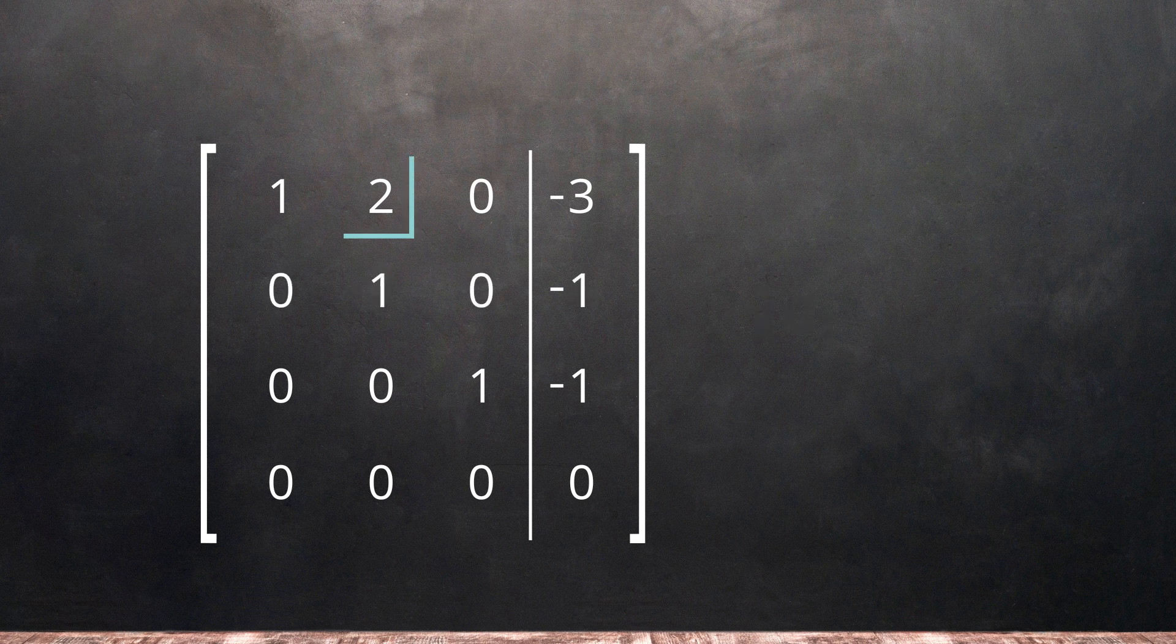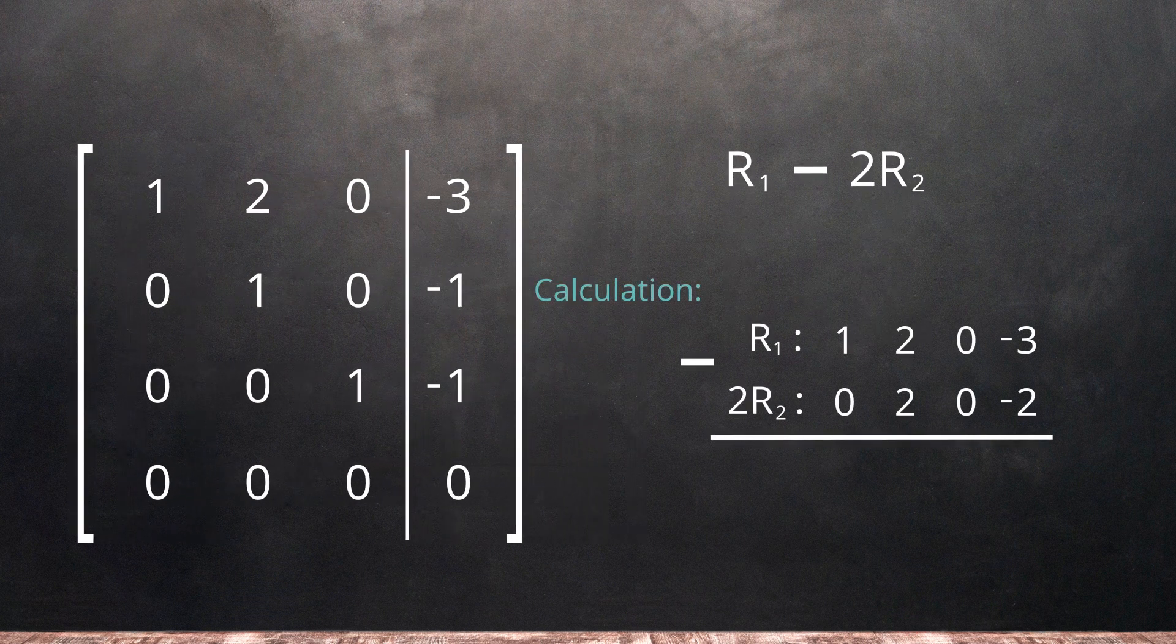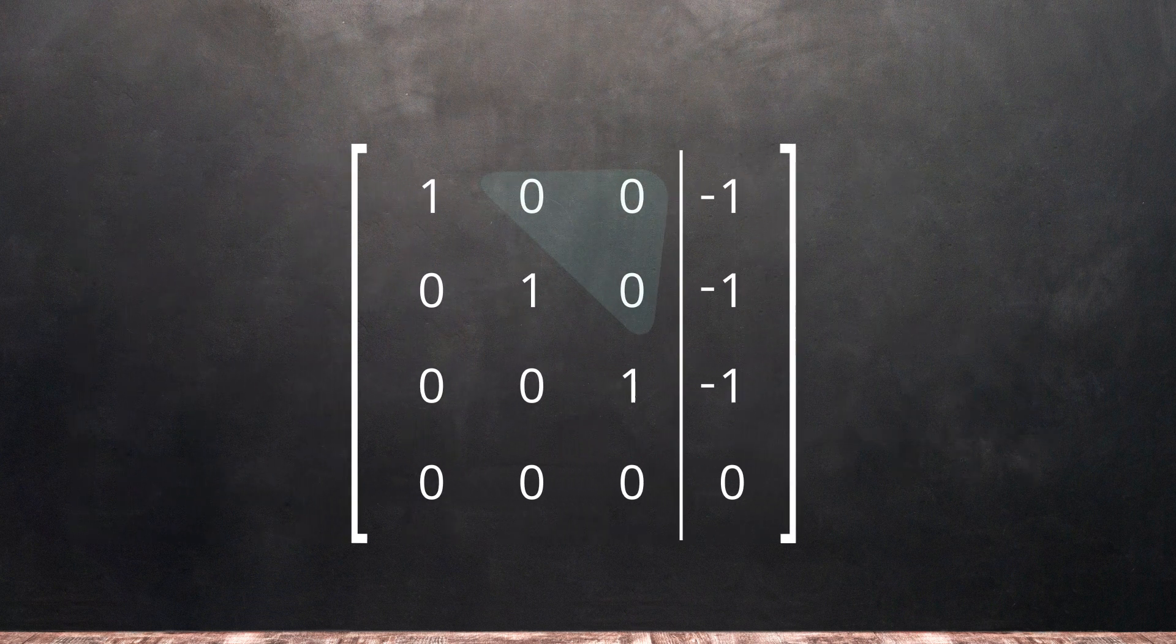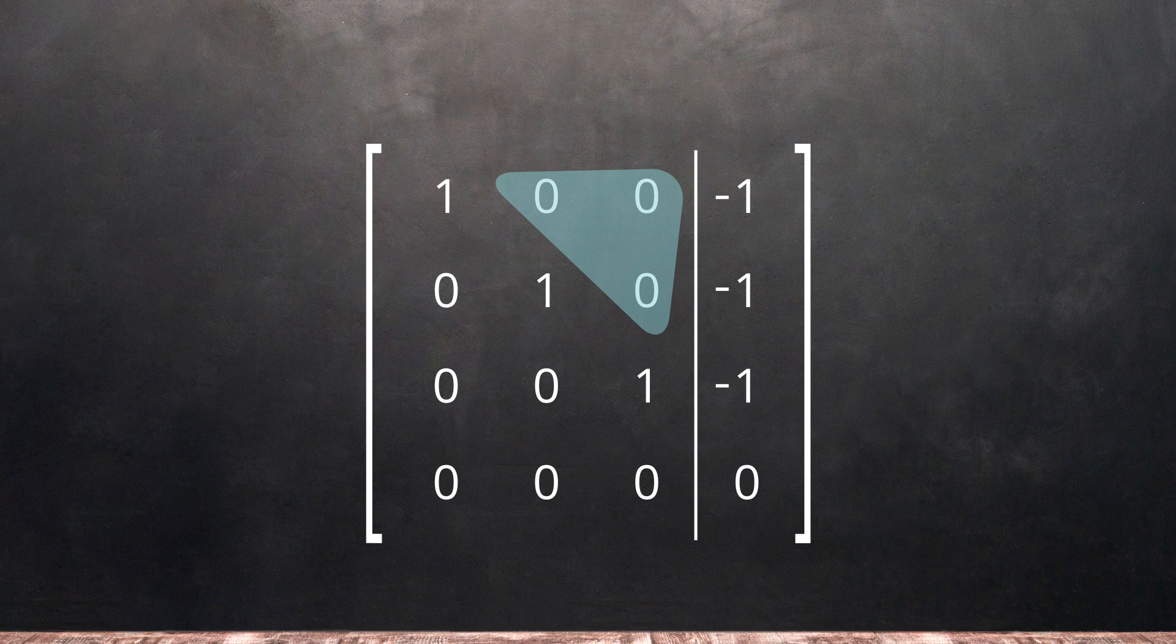To change the 2 in row 1 to a 0, we need to subtract 2 times row 2 from row 1. After performing the calculation, we have our new matrix, which now has an upper triangle of zeros and a main diagonal of ones.